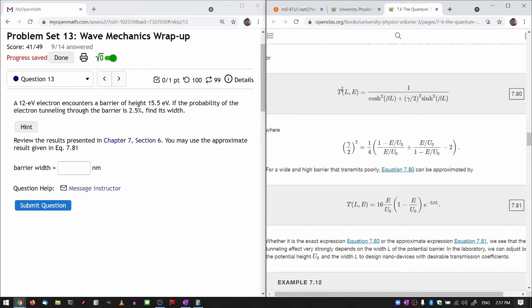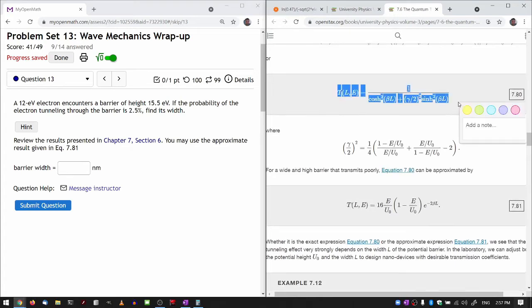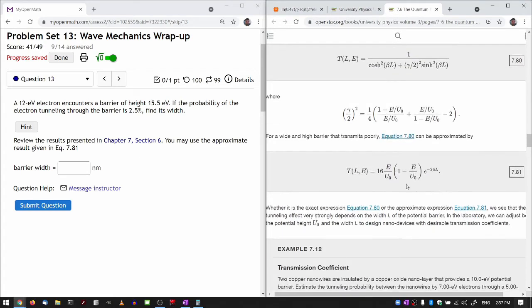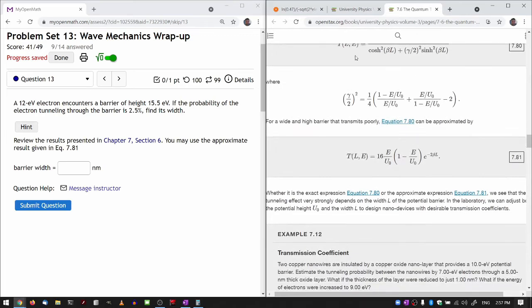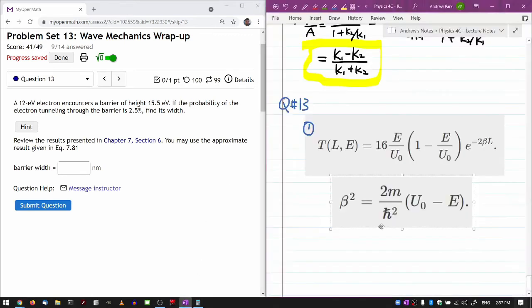If it had a higher tunneling probability, you would want to use this. Looking at the expression here, my goal is to solve. Beta is a parameter that I can actually get numerical value of. So my goal is, given this T, to solve for this L here.